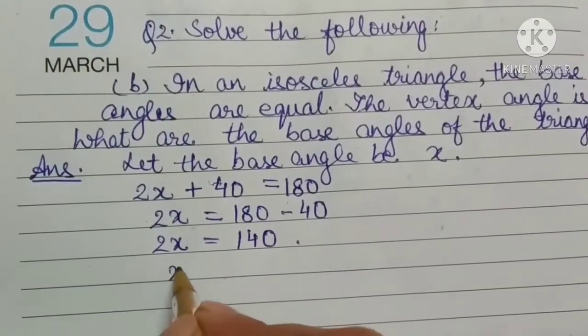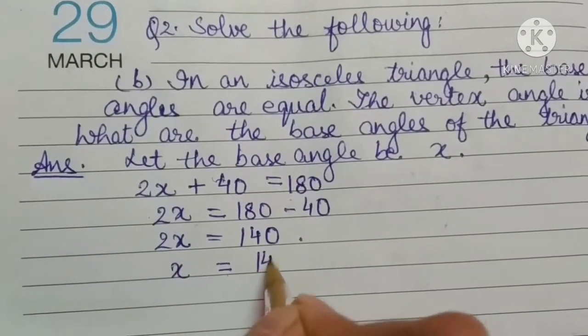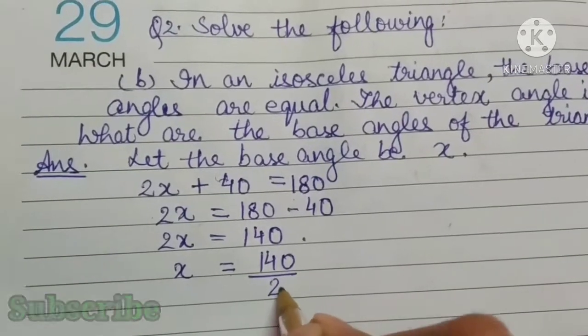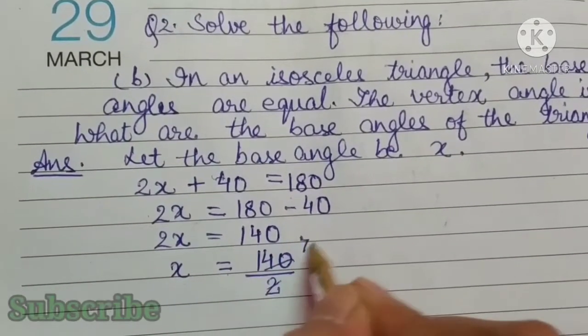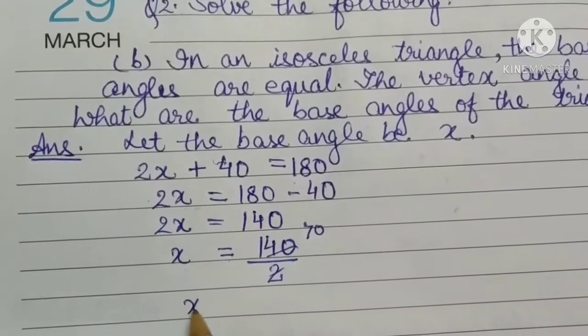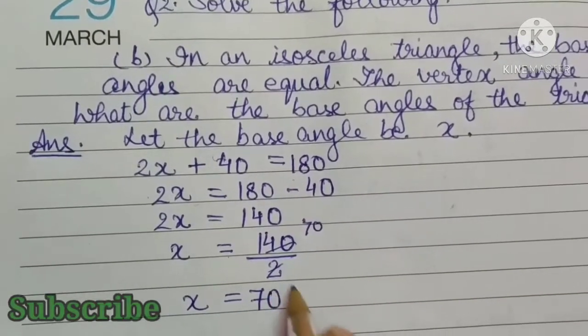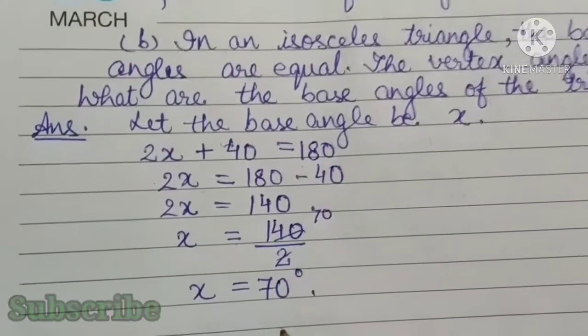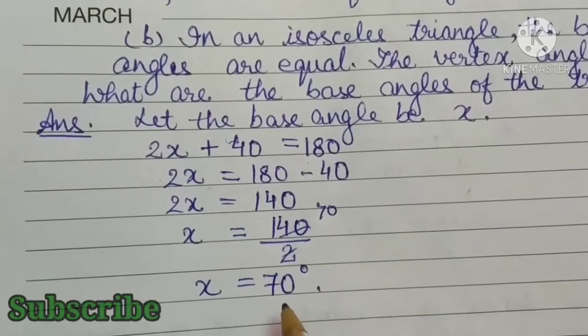Now we will divide both sides by 2. 140 by 2, 2 7s are 14 and 0. So, x is equal to 70 degree. That is, the base angle is 70 degree each.